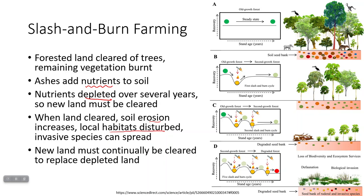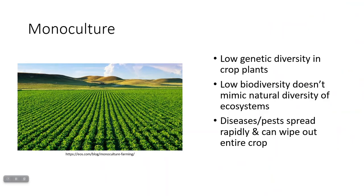Slash and burn farming is only effective if you don't have a huge population. Some research suggests that before Europeans came to the Americas, many indigenous cultures managed grasslands through slash and burn. Their populations were smaller so the impact was lower. At current population sizes, agricultural land has to be continuously used, making slash and burn an ineffective practice today.